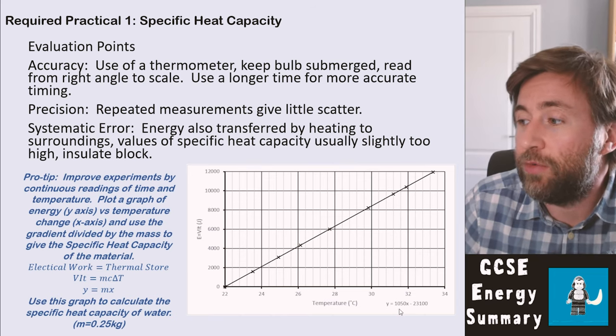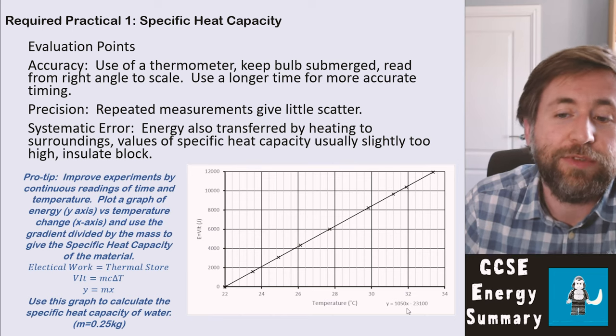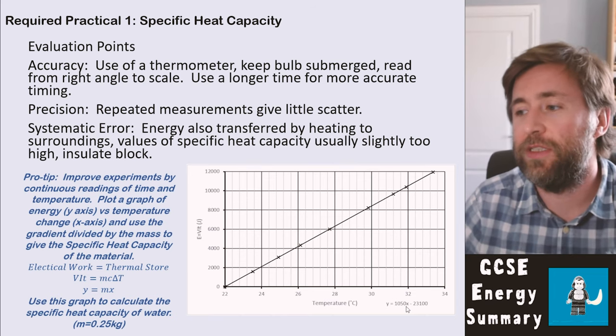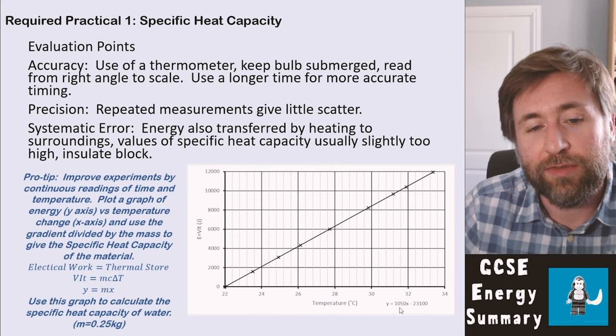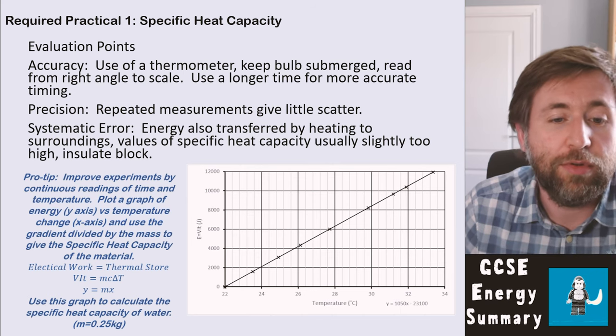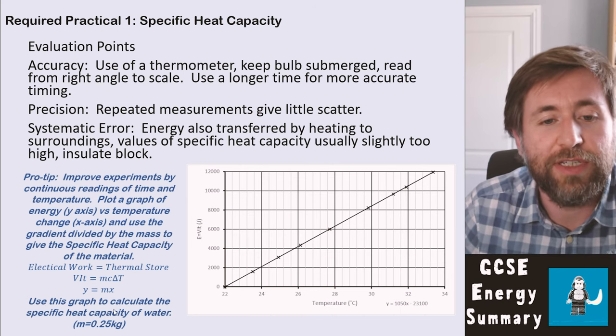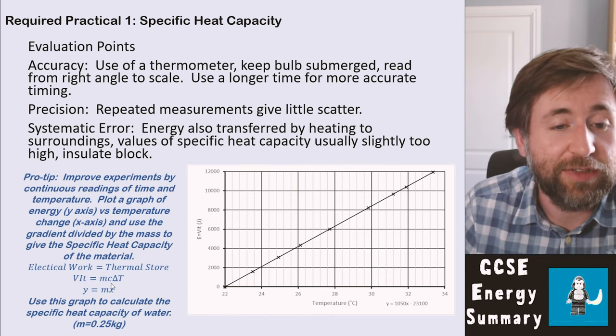You can see down here, y equals 1050x. So the gradient is all we're interested in this case. We can ignore the intercept. The gradient is 1050 and multiply that by four or divide it by 0.25 to give you C, which is the specific heat capacity.